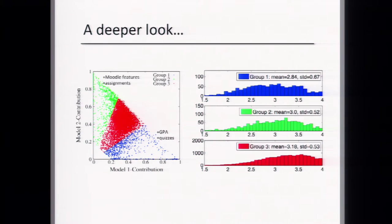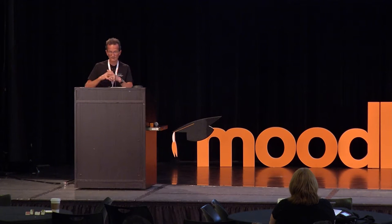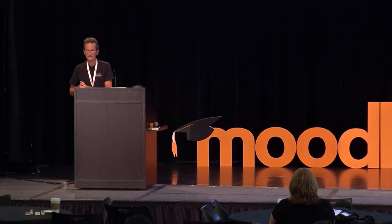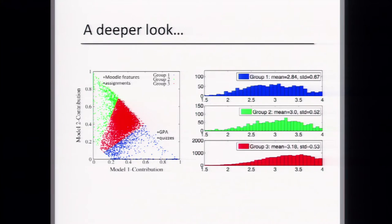Looking at basic statistics — mean and standard deviation — the red group in the middle tends to have the highest GPA. One interpretation is that these students' performance is equally well predicted by both past performance and Moodle interaction. The green group has higher GPA than the blue group. The students best predicted by Moodle-feature models tend to achieve better performance, while the blue group — whose prediction is driven by GPA — achieves the lowest mean grade.